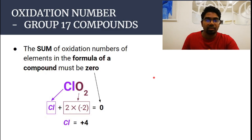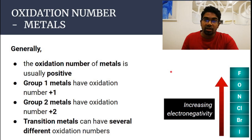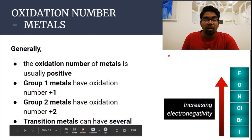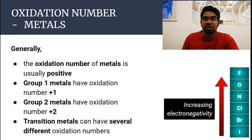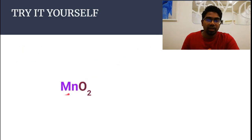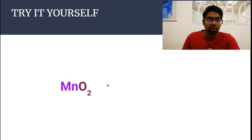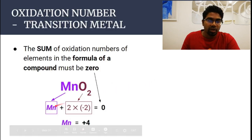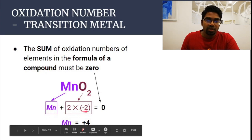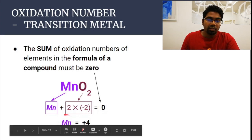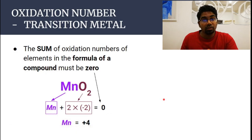For metals, the oxidation number is generally positive. Group one metals always have plus one; group two metals always have plus two. However, transition metals can take on multiple oxidation numbers. For example, manganese is a transition metal. In manganese dioxide (MnO₂): the oxidation number of manganese plus two times minus two equals zero, giving manganese an oxidation number of plus four — which is also why it's called manganese(IV) oxide.